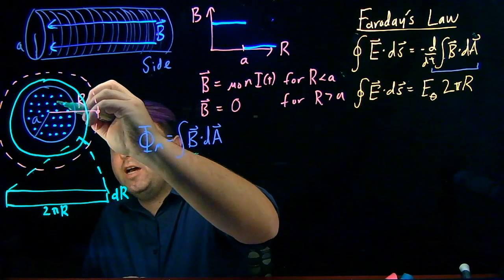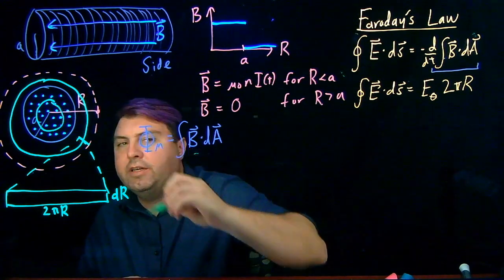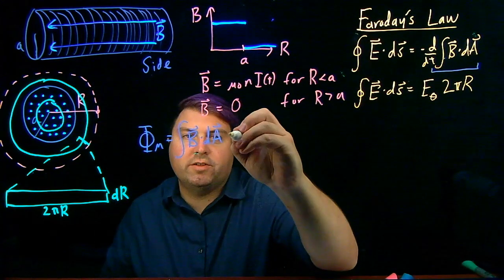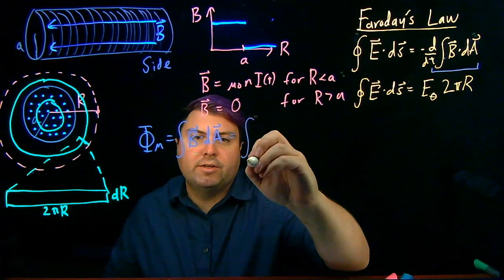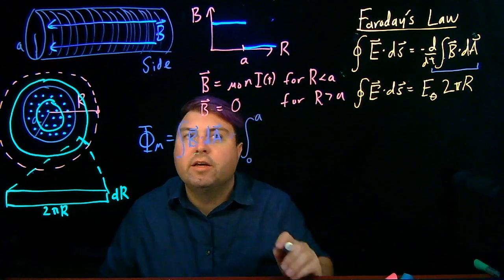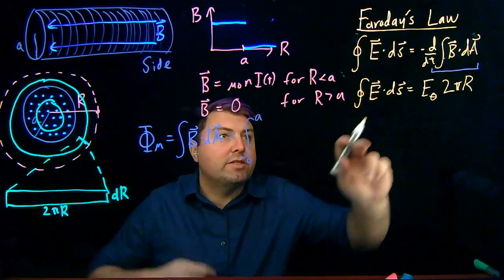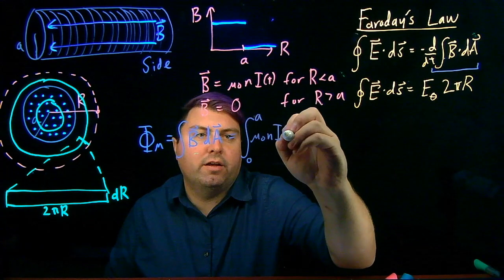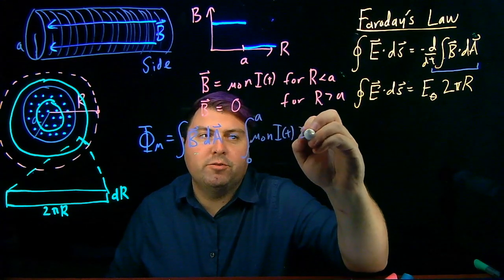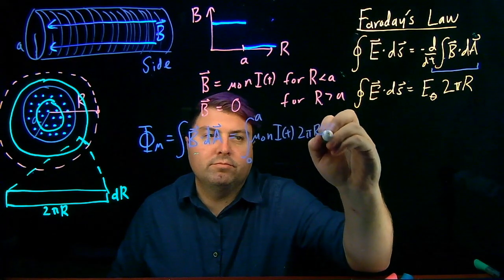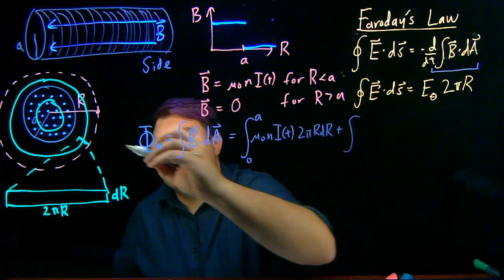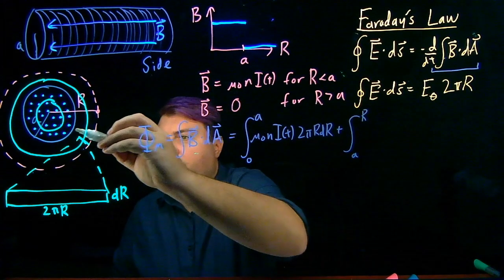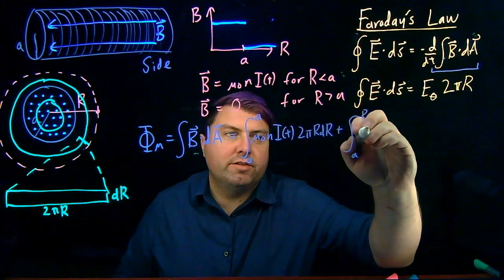So our dA is going to be 2πr times dR. But as we're adding this up, we also have to consider rings inside, so we're actually going to have two terms for this flux term. We're going to have from 0 to A, the magnetic field inside, which we found is μ₀ni(t), times dA, 2πr dR, plus from A to R, the magnetic field outside, which we found is 0.